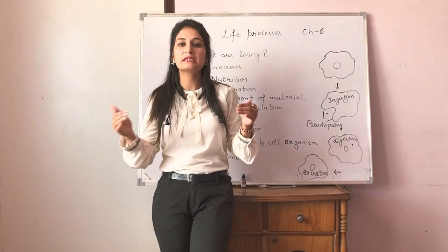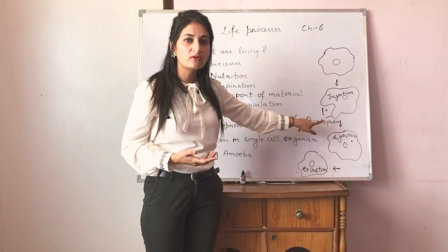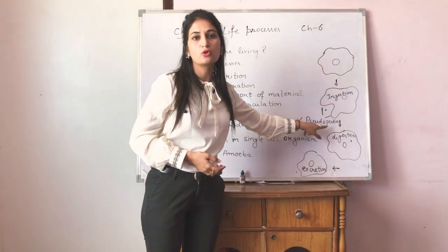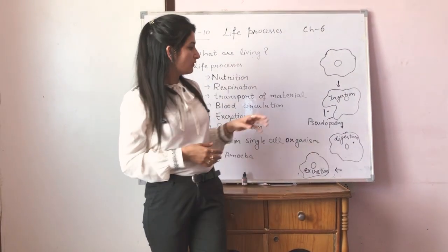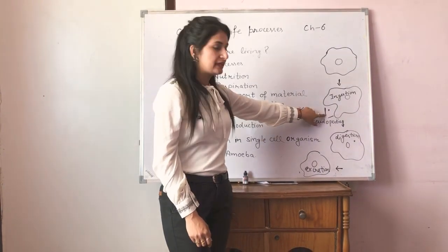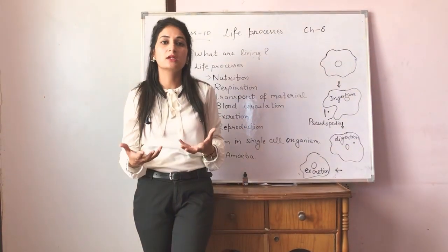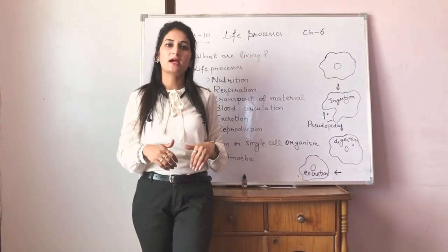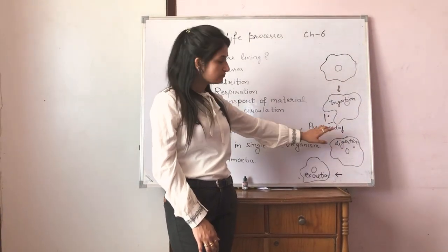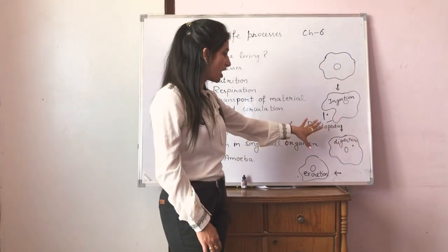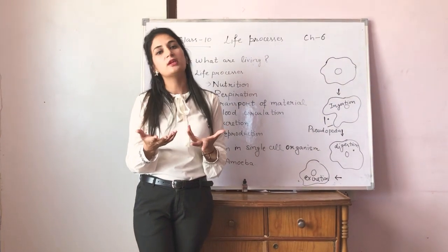Since the body of a single-cell organism is directly in contact with the environment, it diffuses food particles inside its body with the help of its false arms, which are called pseudopodia. Pseudopodia are the false arms of amoeba or single-cell organisms. With the help of pseudopodia, amoeba intakes and ingests its food — it takes food inside the body using its false arms. Then it performs digestion within its body. After digestion, with the help of those pseudopodia, it excretes the waste material from its body.